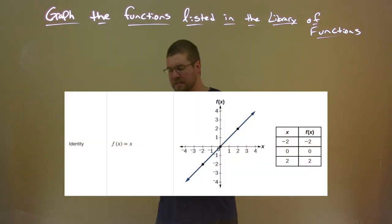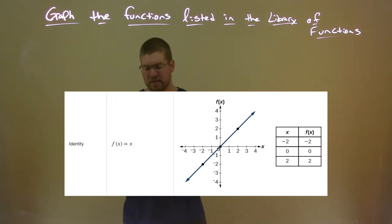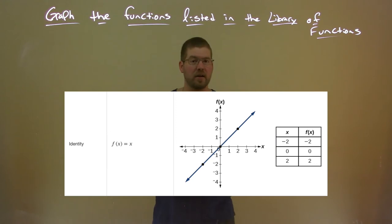The second one is the identity function, f of x equals x. This function goes through the origin, and we can see our table there that represents the points on this graph.